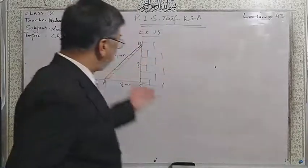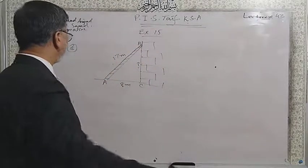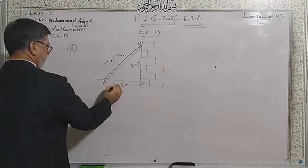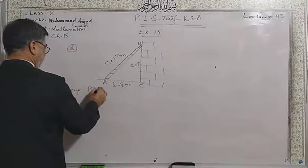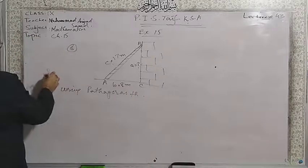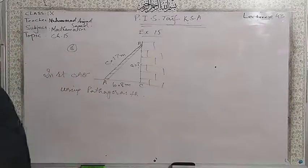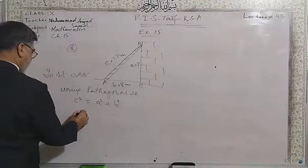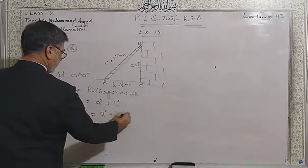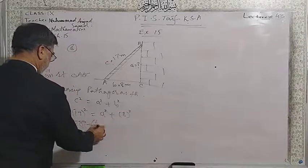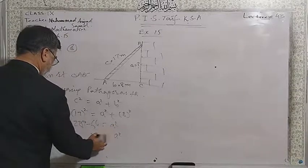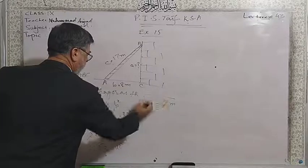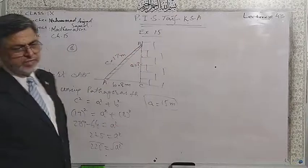This is the same as question number 3, with exactly the same values. Using Pythagoras theorem in right triangle ABC: c² = a² + b², so 17² = a² + 8², giving 289 = a² + 64. Therefore a² = 225, and taking the square root, a = 15 meters. That is the height on the wall where the ladder will reach.